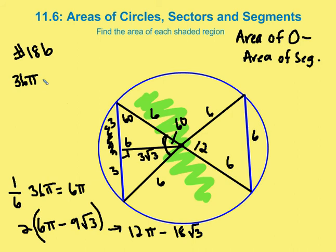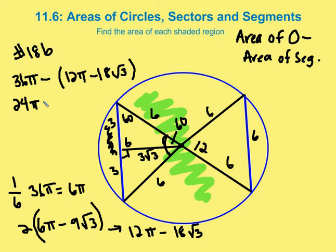Subtracting the two segments from the circle: 36 pi minus (12 pi minus 18 root 3). Distributing the negative, that value becomes positive, leaving us with 24 pi plus 18 root 3 as the area of the internal portion of the circle, excluding the two segments.